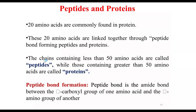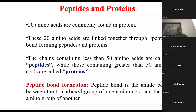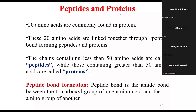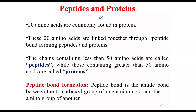A chain of amino acids containing less than 50 amino acids is called a peptide. When you have a chain that contains more than 50 amino acids, those are called proteins.